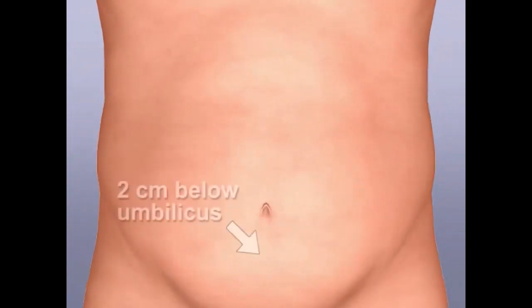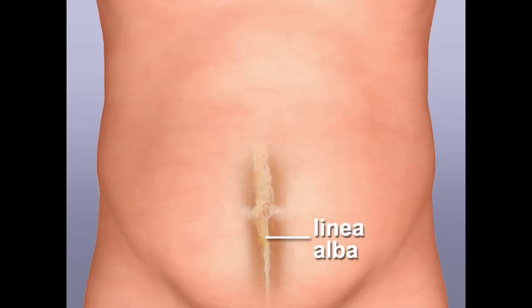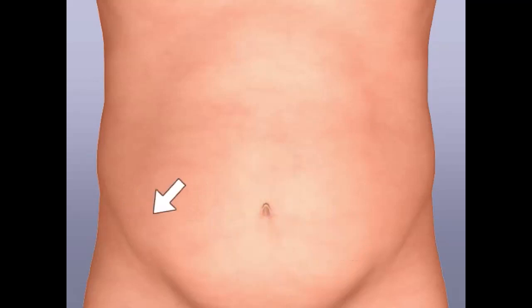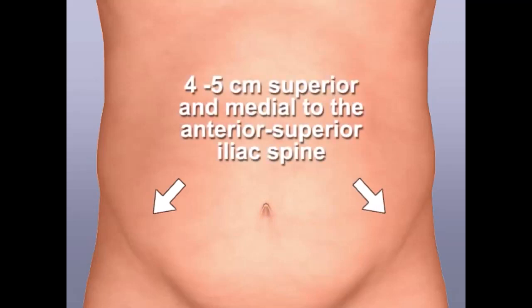A point two centimeters below the umbilicus may be chosen, offering the advantage of needle entry through the tendinous, avascular linea alba. Alternatively, either a right or left lower quadrant approach may be used at a point four to five centimeters superior and medial to the anterior superior iliac spine.